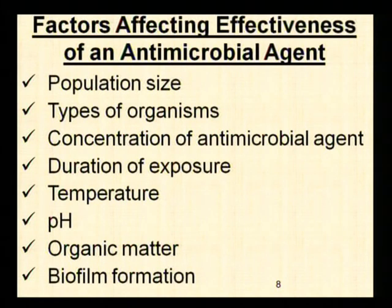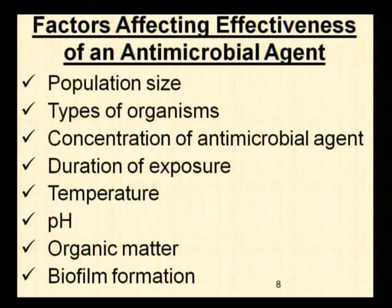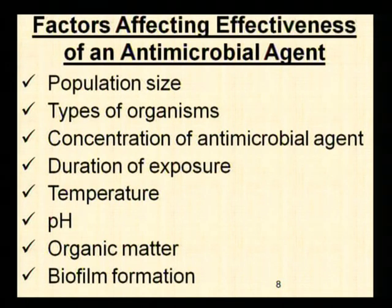Now, what are the factors which affect the effectiveness of the antimicrobial agent? In actual conditions in the field, the antimicrobial agent and the organism when they come in contact with each other, the conditions will not be optimum. There will be many variables which will play an important role. Some of them are listed here. That includes the population of the organism — naturally, greater the load of the organisms, the effectiveness of the antimicrobial agent will be decreased; these are inversely proportional. Then the type of organisms — we will see the resistant patterns of different organisms, because all organisms are not sensitive enough.